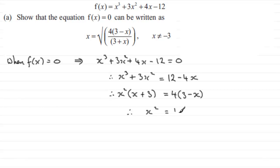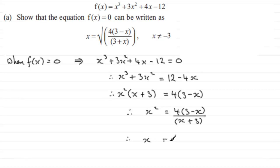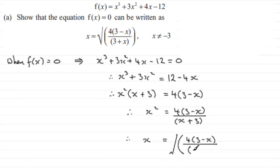Now I can divide both sides by (x plus 3), so we've got x squared equals 4 multiplied by (3 minus x), all divided by (x plus 3). Then if I've got x squared equals this expression, I can square root both sides, which leaves me with x equals the square root of all of 4 multiplied by (3 minus x) over (3 plus x) — writing the denominator as 3 plus x to match the required form.